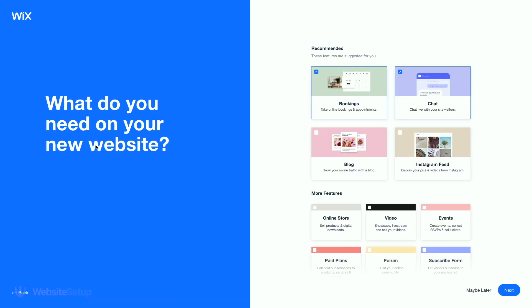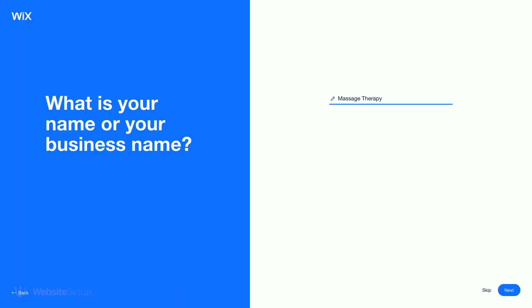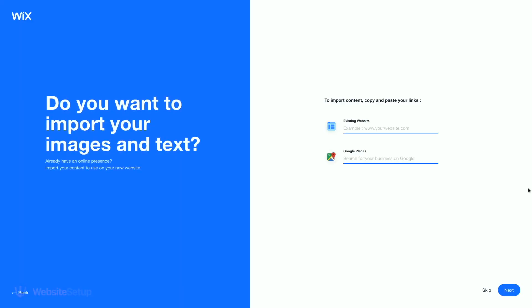Now based on everything you've selected up until this point, Wix will suggest a set of features for your site. In our case, Wix suggests a module for online bookings, chat, a blog, and a handful of other things. What you'll see on this screen can vary based on your answers, so go through this list and take the features that make the most sense for you. In the next step, Wix will ask you about your business name, and then whether you'd like to import existing content from other websites or Google Places listings.